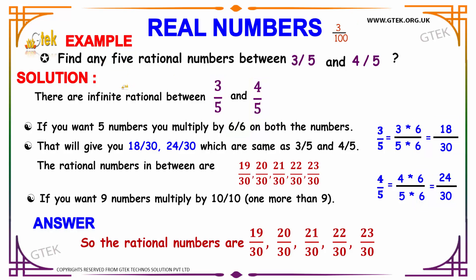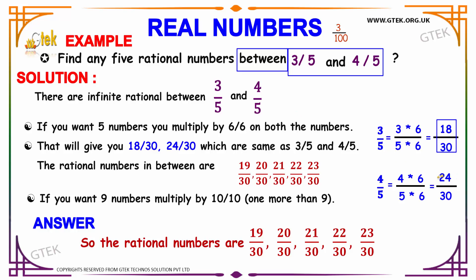As per the question, we need to find any 5 rational numbers that lie between 3/5 and 4/5. This is the logic we need to have in mind. Since we need numbers between, 18/30 is on one side and 24/30 is on the other. By skipping 18/30, the in-between terms are 19/30, 20/30, 21/30, 22/30, and 23/30. We do not consider 24/30 as it does not fall under the 'between' concept.